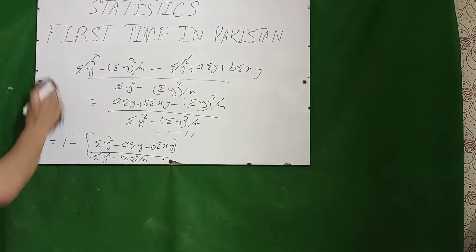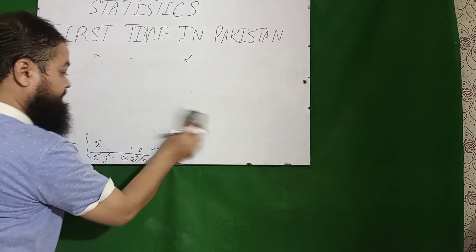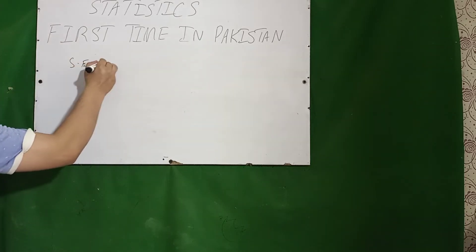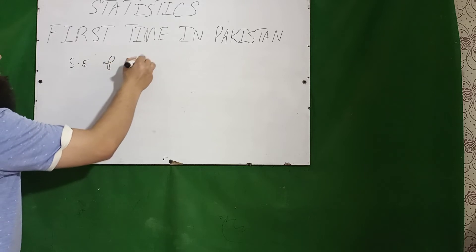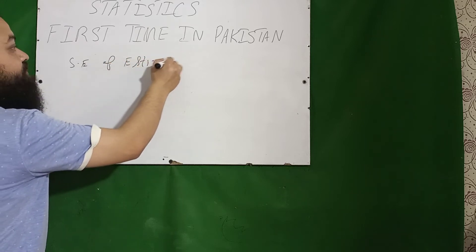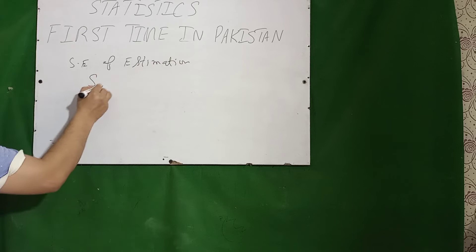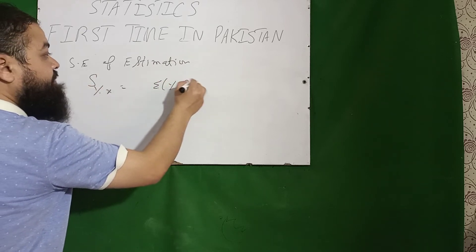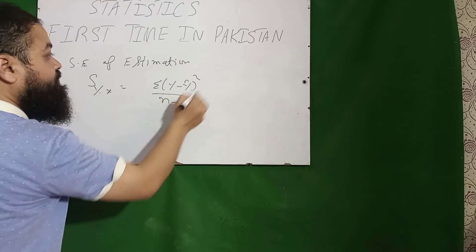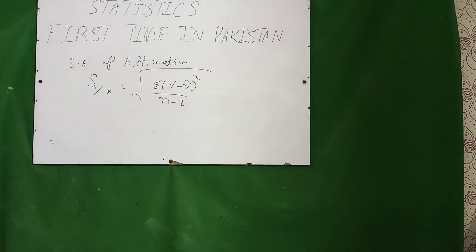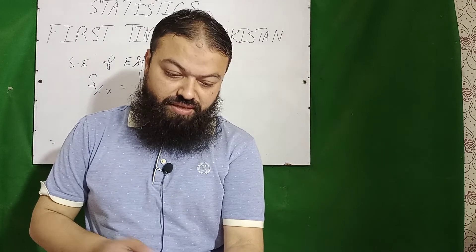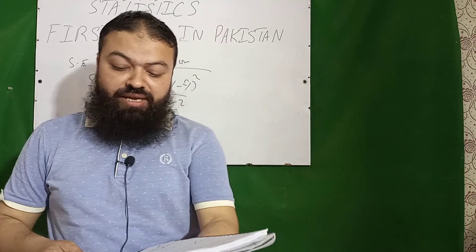Then I will tell you what is the standard error of estimate, which is also called the standard deviation of the regression. That is equal to s_y.x, and that is equal to √[Σ(y − ŷ)² / (n − 2)].